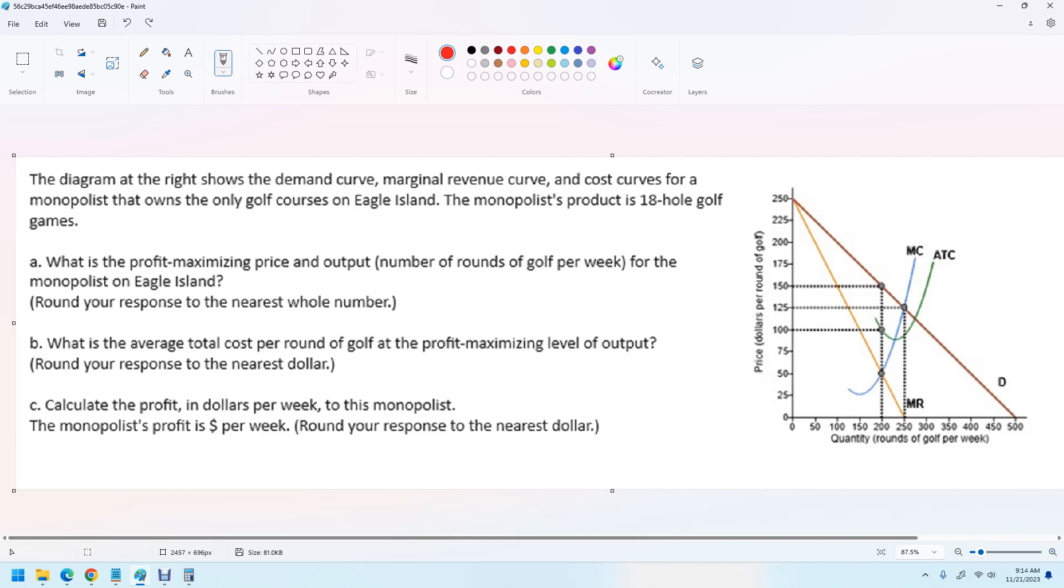Okay. If you pause the video, what we do is we look for profit maximizing output, which is always going to be where MR equals MC. Okay. Let's write with a different color. Let's make this a little bigger. Okay. So where does MR equal MC? So we go down on MR. It equals MC right there. So that's 200.